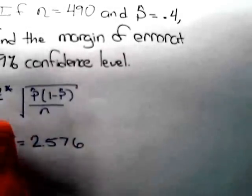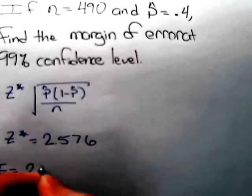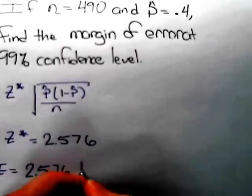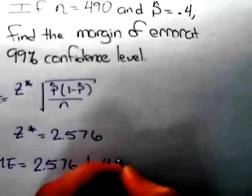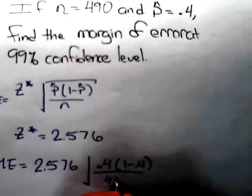Substituting all these values to get the margin of error, we get that the margin of error is equal to 2.576 times the square root of 0.4 times 1 minus 0.4, all divided by the sample size.